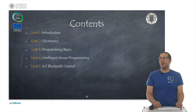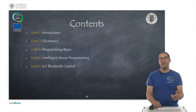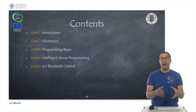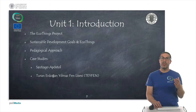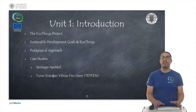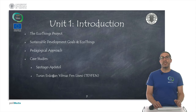These are the contents of the course, which is divided into five units. The introduction unit is this one. In unit 1, we're going to talk about the EcoThings project, sustainable development goals within EcoThings, and the pedagogical approach followed in this project. We're also going to present two case studies implemented in two different schools: a primary school, Santiago Apostol, and a secondary school, the Tafen School.